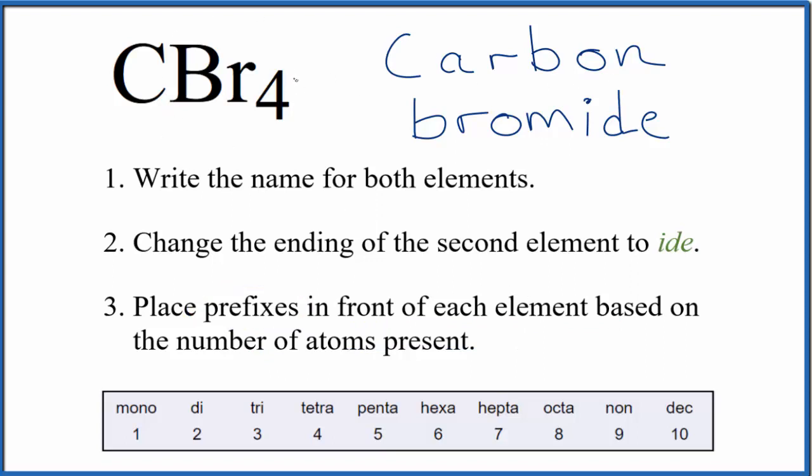But for the bromine, we have four bromine atoms. Four, that's tetra. So we need to write tetra in front of the word bromide.